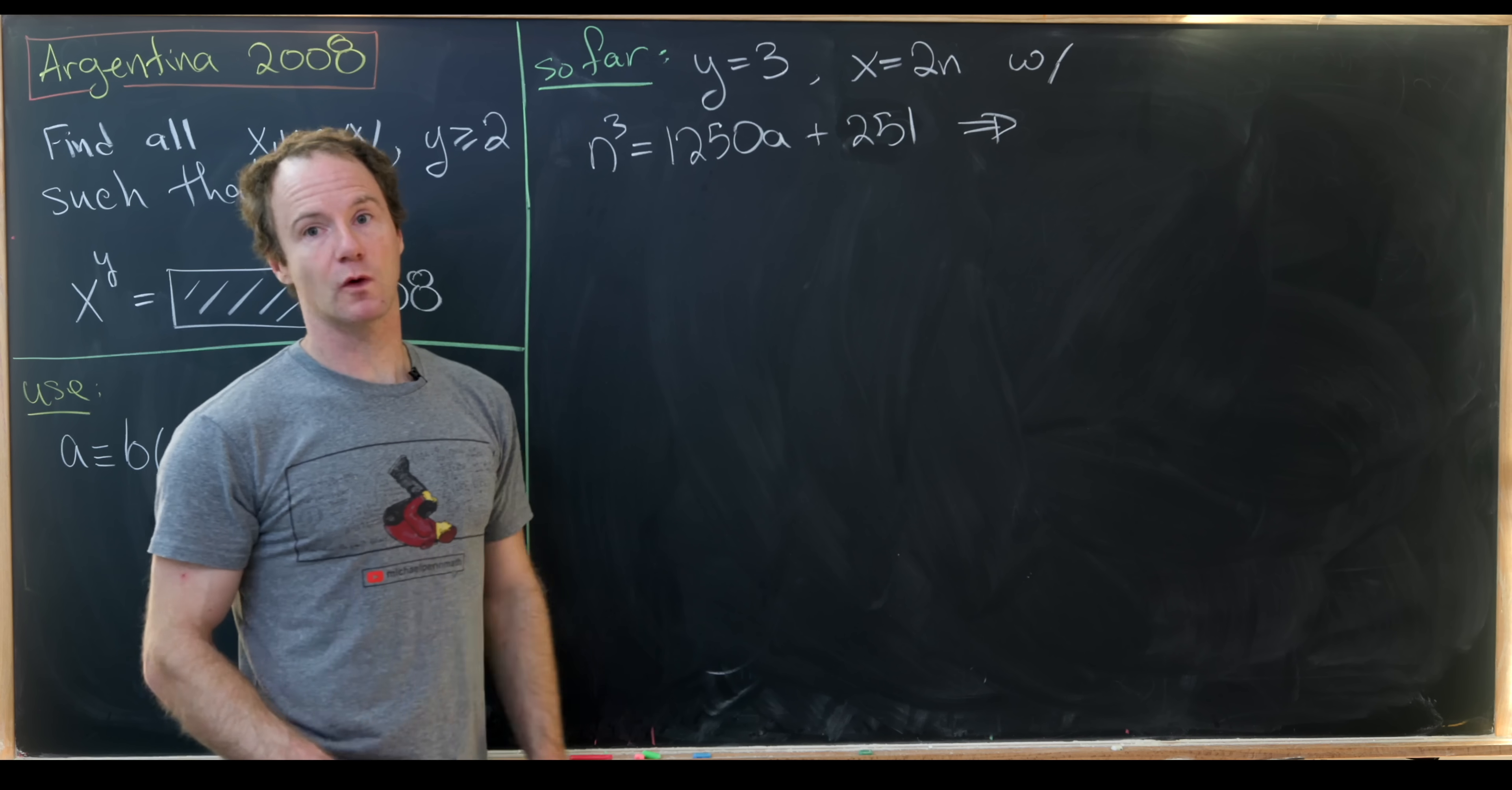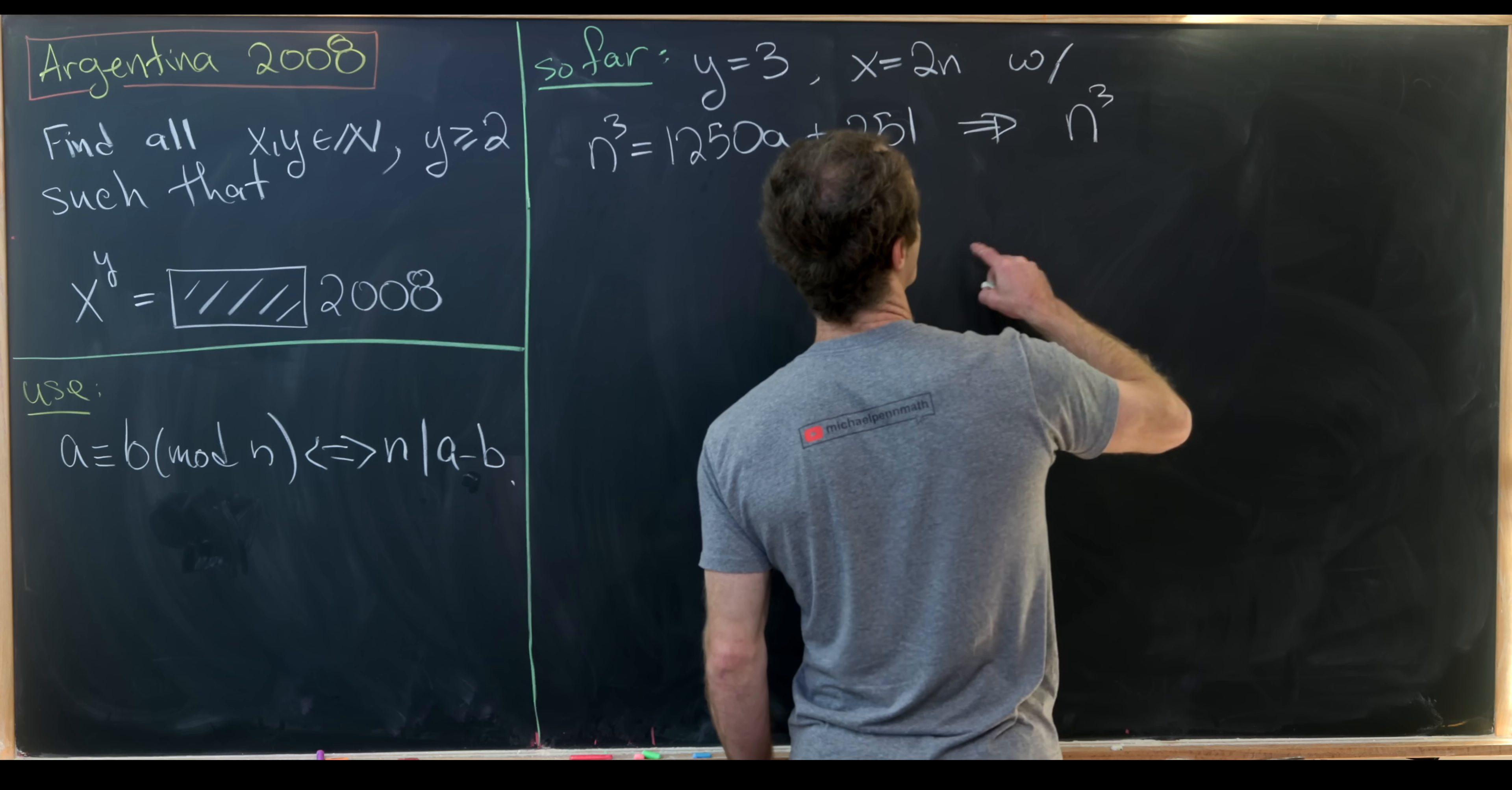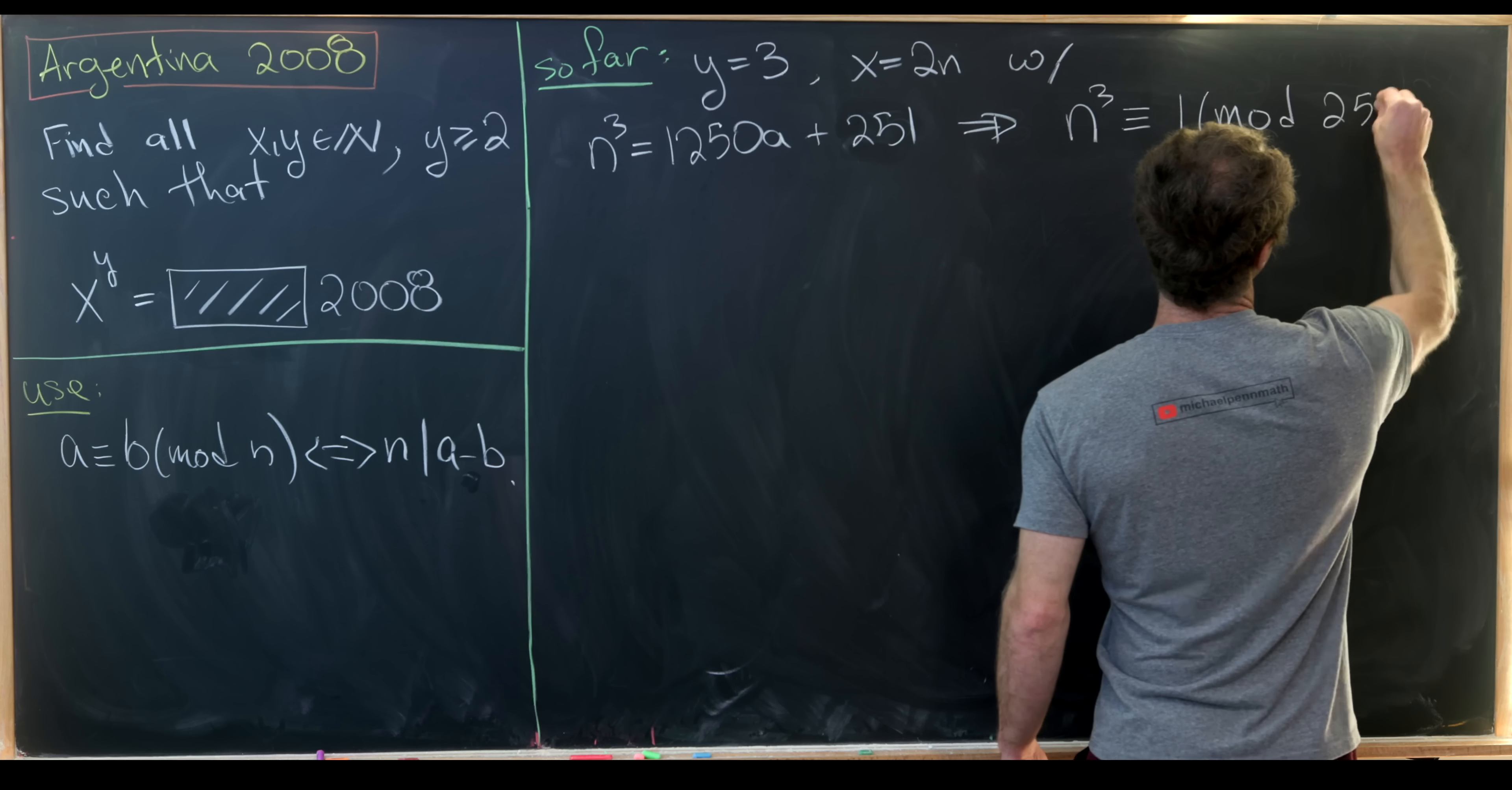And then this is one more than a multiple of 50. So that means we get this nice equation or congruence: n cubed is congruent to 1 mod 250.